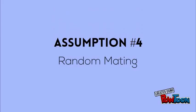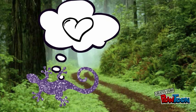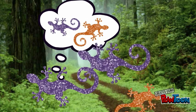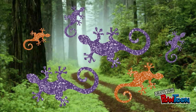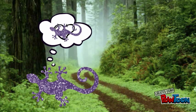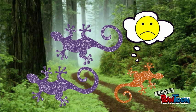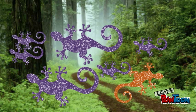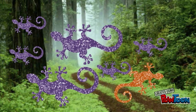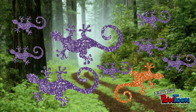The fourth assumption states that random mating is essential to the Hardy-Weinberg principle because it gives an equal chance for all alleles to be passed down to the next generation. Non-random mating can give advantages or disadvantages to certain alleles, allowing them to be passed down to more offspring than others, increasing or decreasing their relative frequency in the population.